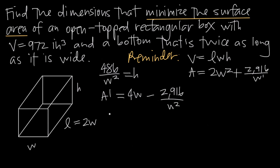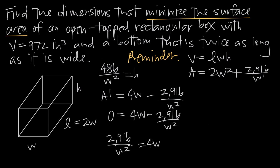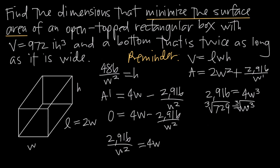To find critical points, set A′ = 0: 4W − 2916/W² = 0. Adding 2916/W² to both sides gives 2916/W² = 4W. Multiplying both sides by W² yields 2916 = 4W³. Dividing by 4: W³ = 729. Taking the cube root of both sides: W = 9, since 9³ = 729.